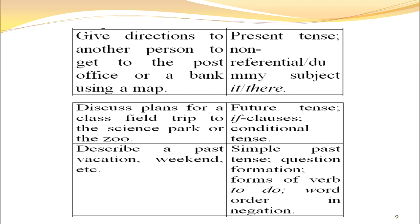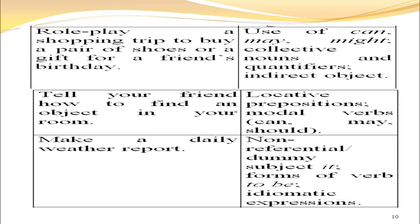If you describe a past vacation or weekend, you can talk about grammar topics like simple past tense, question formation, forms of the verb 'to do', word order, and so on. Similarly, if you select a role play — a shopping trip to buy a pair of shoes or a gift for a friend's birthday — then you talk about the use of 'can', 'may', 'might', collective nouns and quantifiers, indirect objects, etc.